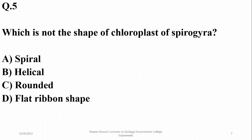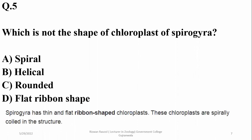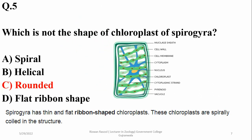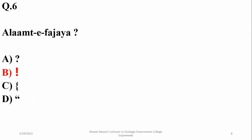Question five was about which is not the shape of the chloroplast of Spirogyra. In Spirogyra, the chloroplast is helical, which sometimes looks like a flat ribbon shape as you can see in the diagram. However, they do not have a rounded or spherical chloroplast, so the right option is C (Charlie).